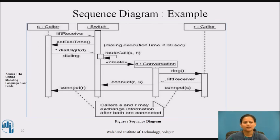For example, the figure shows a sequence diagram that specifies the flow of control involved in initiating a simple two-party phone call. First, there is an object lifeline.